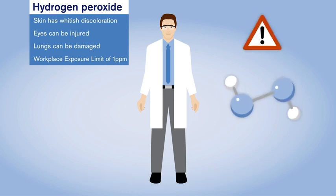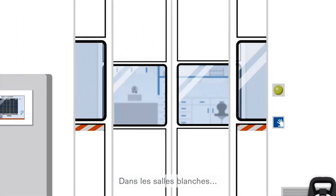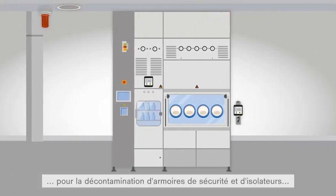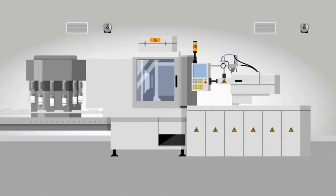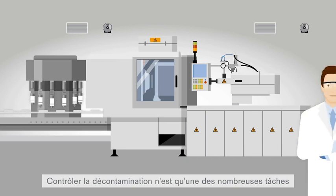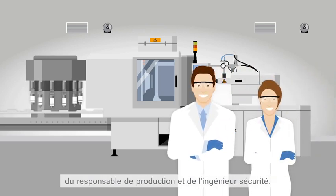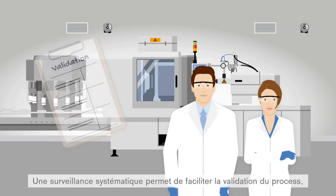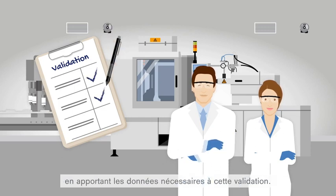H2O2 monitoring is crucial when this substance is used for decontamination in the pharmaceutical industry — from use in clean rooms, to decontamination of safety cabinets and insulators, and further production facilities. The monitoring of decontamination is just one of the many tasks of the production manager and safety engineer. Systematic monitoring can help facilitate the necessary validation of this process by providing the required measurement data.